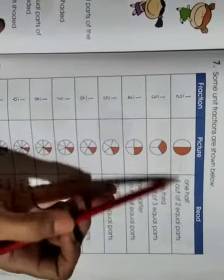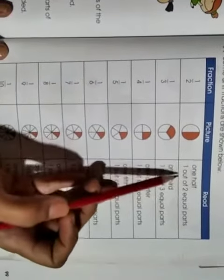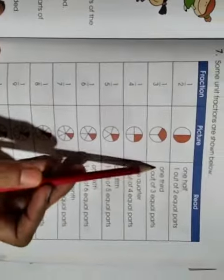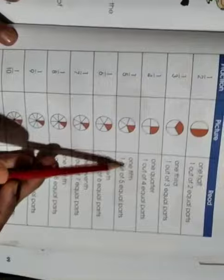On page 226, you have to match the pictures and fractions. One-half means one out of two equal parts. One-third means one out of three equal parts. One-quarter means one out of four equal parts. One-fifth means one out of five equal parts.